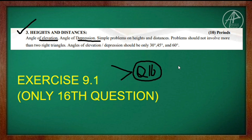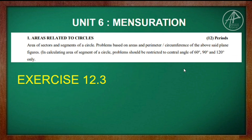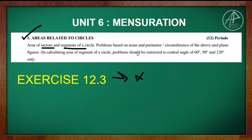Unit 6 is Mensuration. The chapter is Areas Related to Circles. Exercise 12.3 is deleted. The remaining topics include the area of a sector and area of a segment — these are the key topics to study.